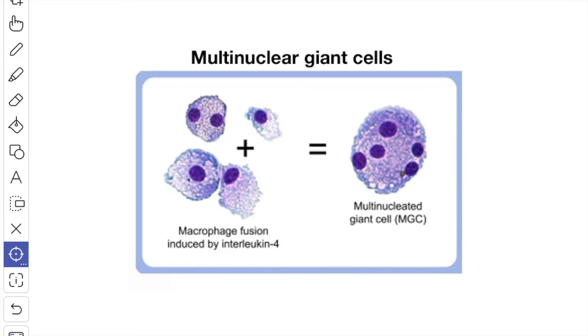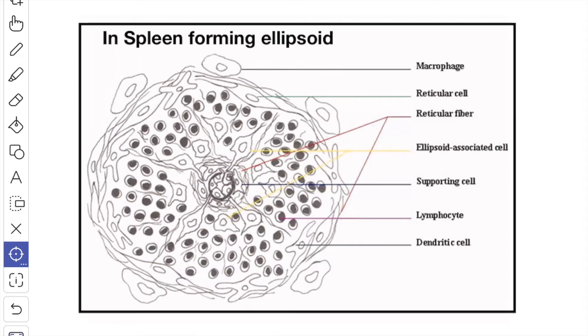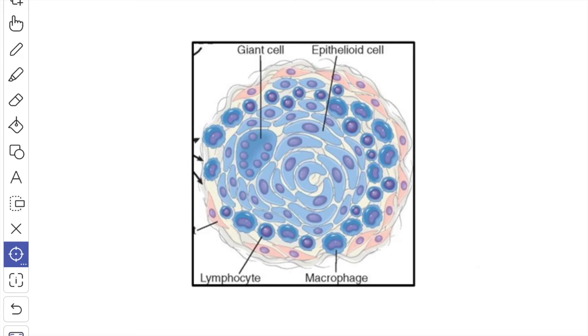When the macrophages come in contact with large particles, the macrophages fuse together to form multinuclear giant cells. These are also called foreign body giant cells. These macrophages in the spleen form ellipsoids around small arteries. In the presence of organisms like tubercle bacilli, these cells may transform to epithelioid cells.